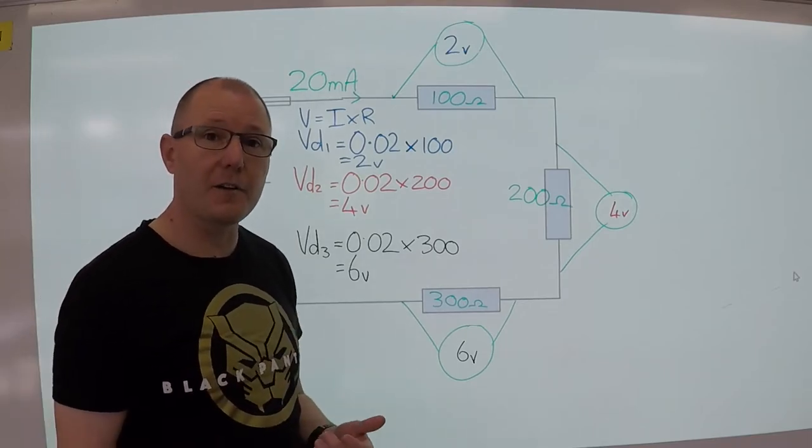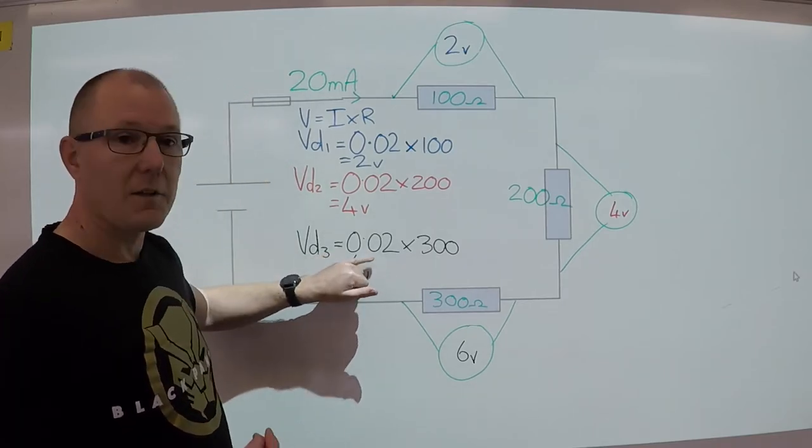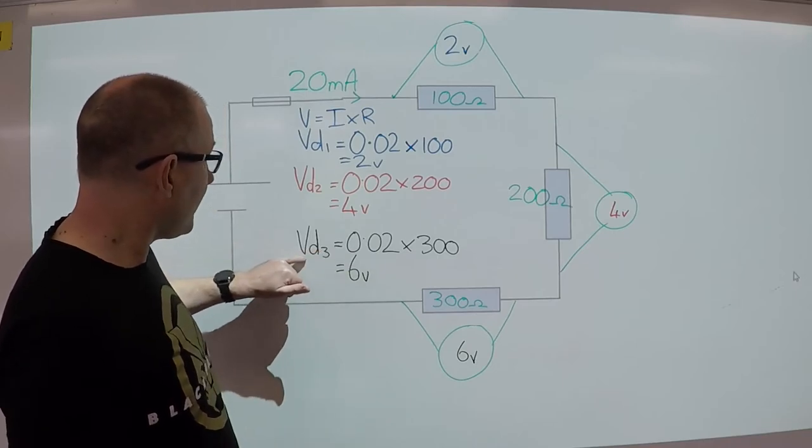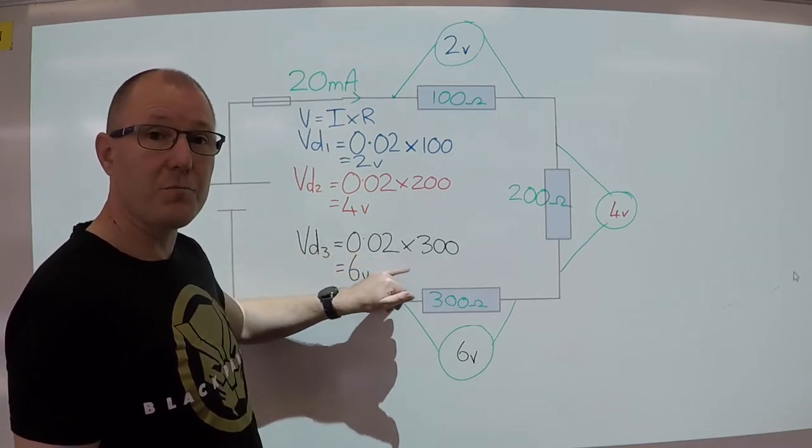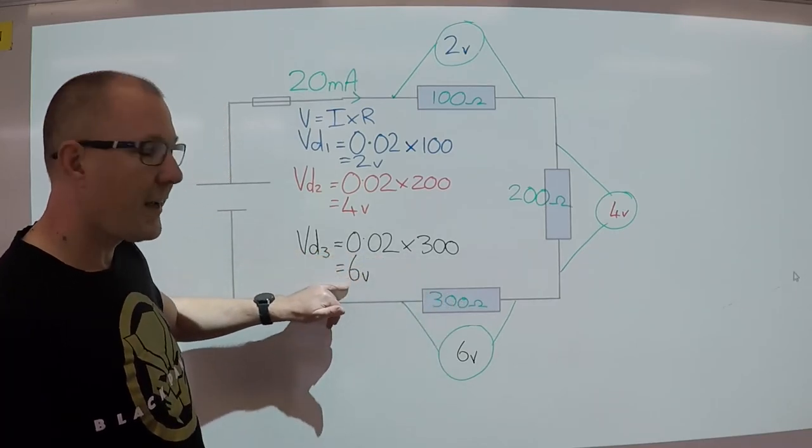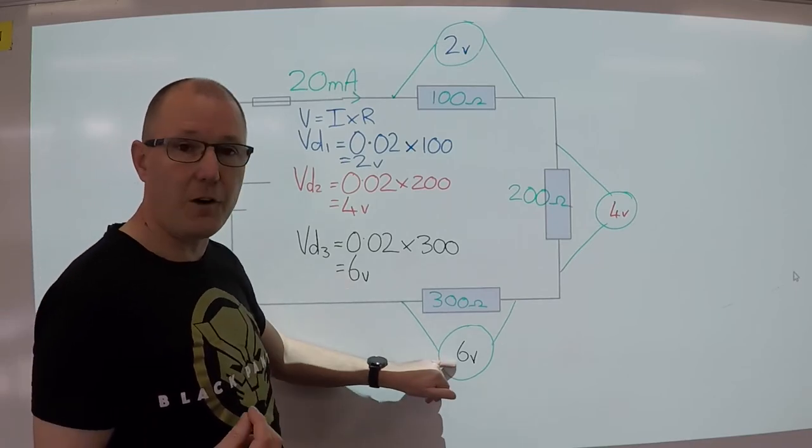Resistor 3 is 300 ohms. Same formula, is 0.02 multiplied by the 300 and that gives us a voltage drop of 6 volts.